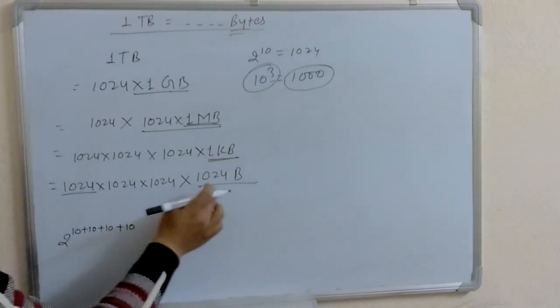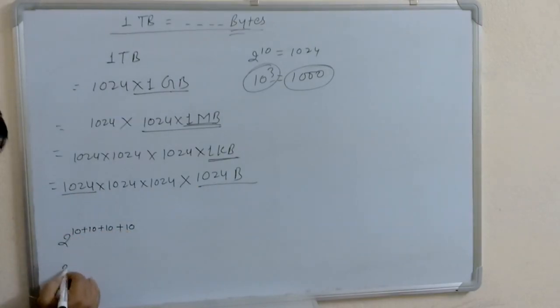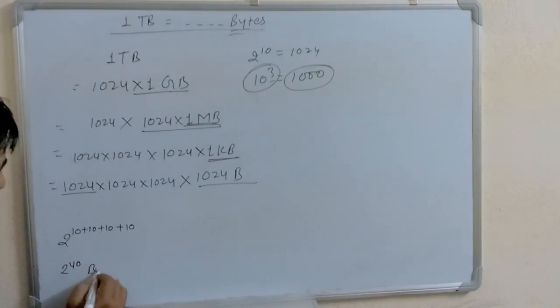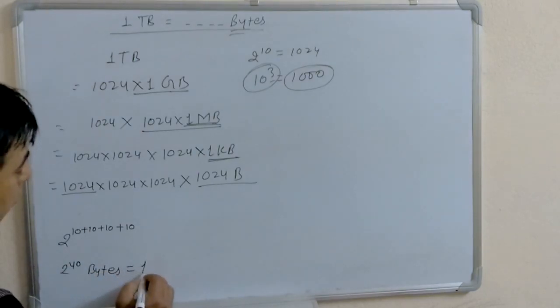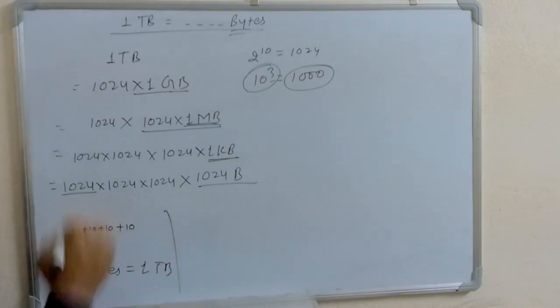Counting the four terms — one, two, three, four. That is why two power forty bytes is equal to one terabyte, in case of two power ten.